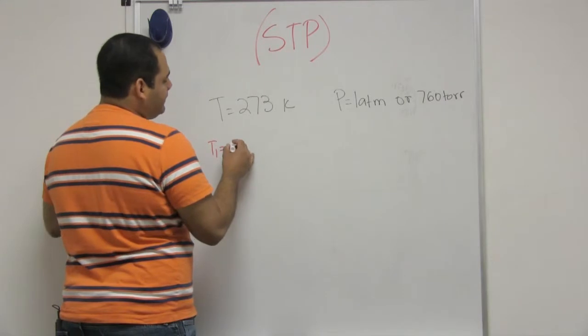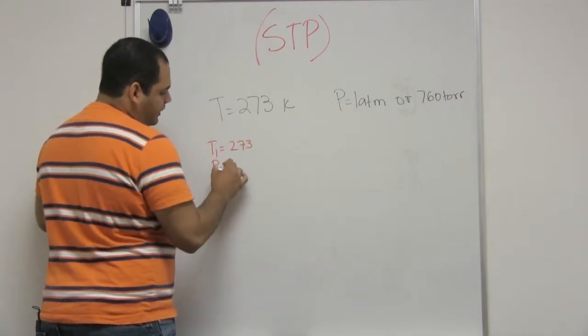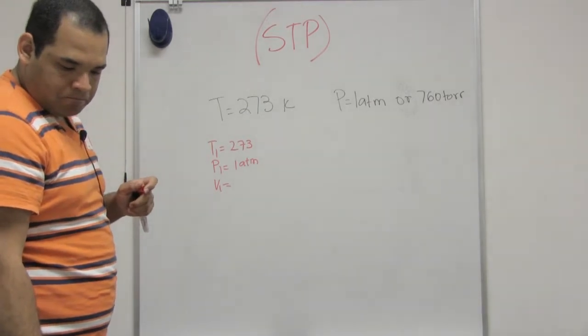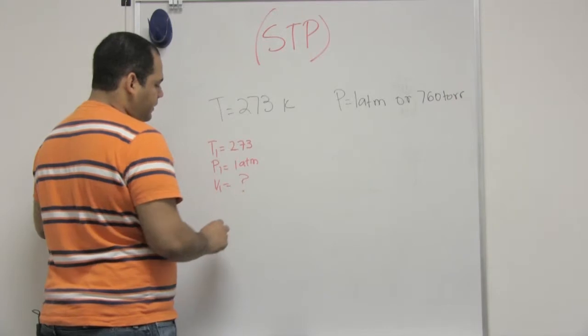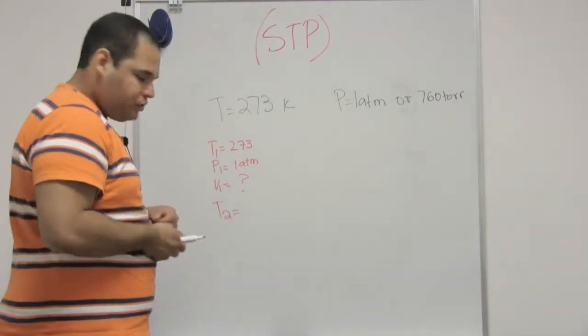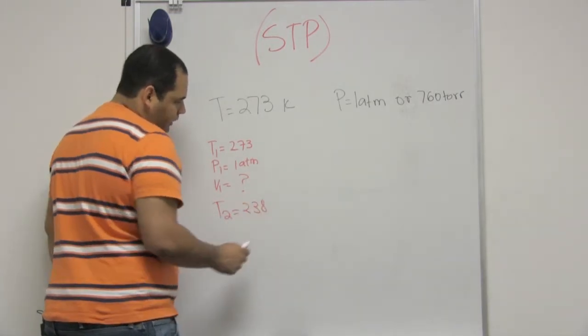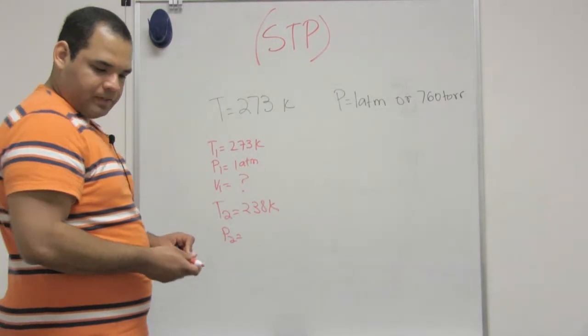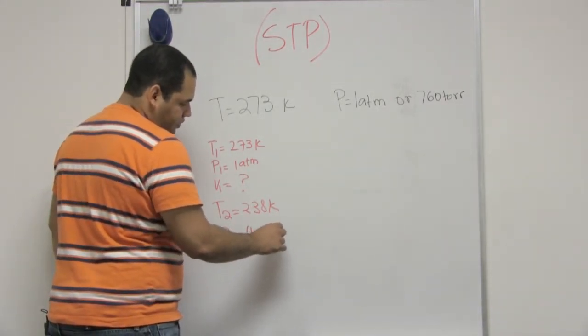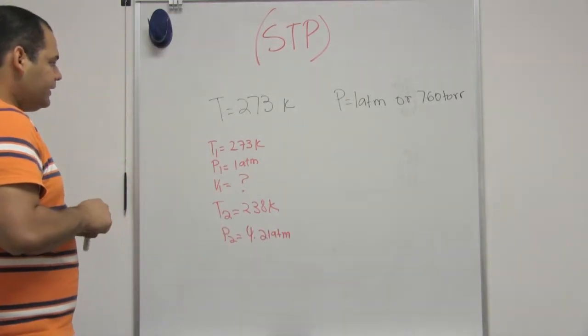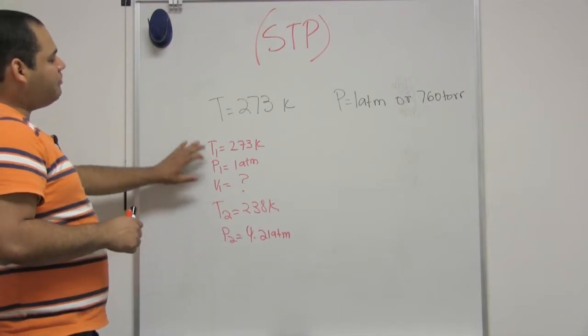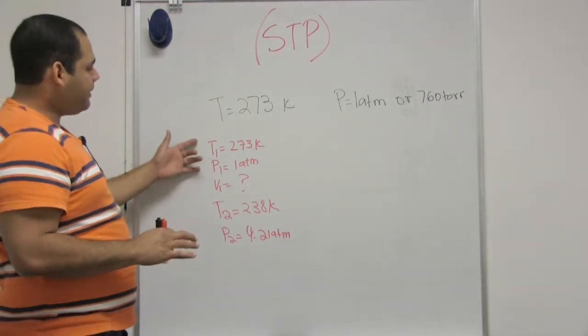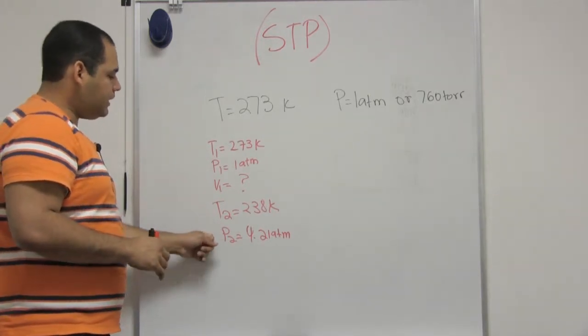So because it is initially in STP, I know the temperature 1 is 273 kelvin, my pressure 1 is 1 atm. They want to find out the initial volume when my temperature 2 decreases to 238 kelvin and my pressure 2 is 4.21 atm. So what is the initial volume if my gas was in STP and then I changed the temperature to 238 and the pressure to 4.21?